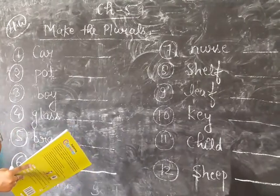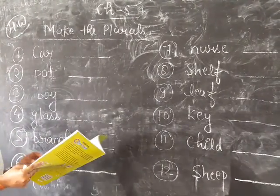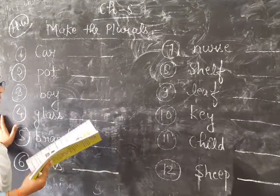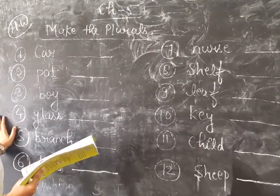And now today we shall discuss, there are some nouns that do not follow these rules. The plural form of such nouns is irregular. Some nouns do not follow these rules.